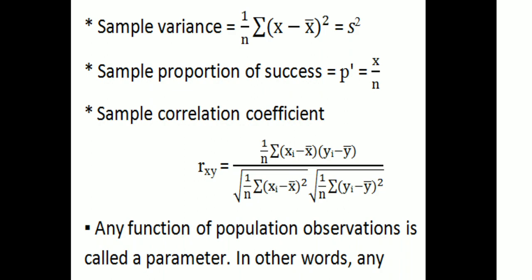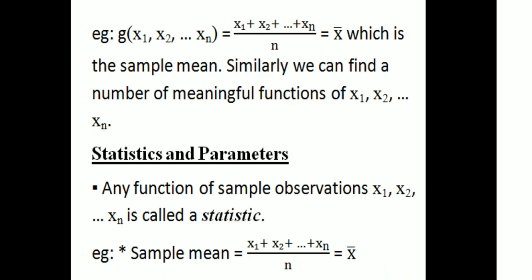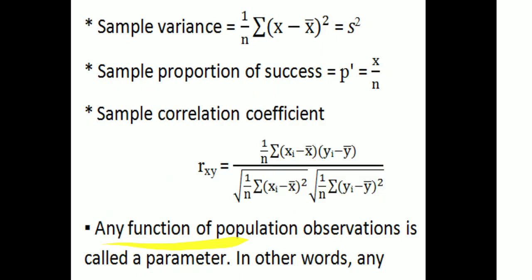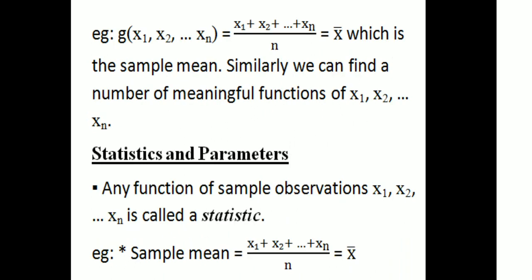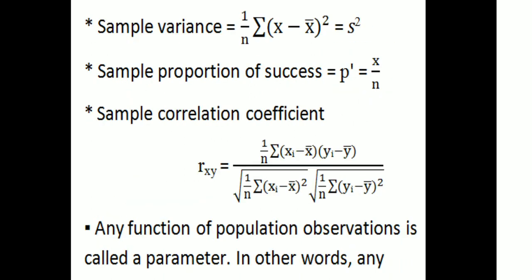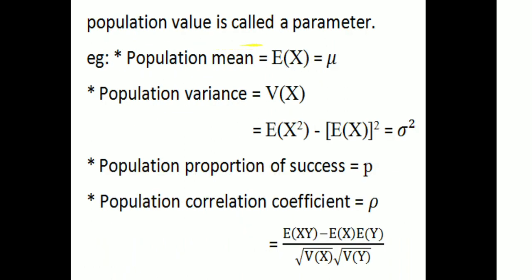Any function of population observations is called a parameter. Examples of parameters include: population mean μ = E(X), population variance σ² = V(X), population proportion of success p, and population correlation coefficient ρ = [E(XY) − E(X)·E(Y)] / [√V(X) · √V(Y)].